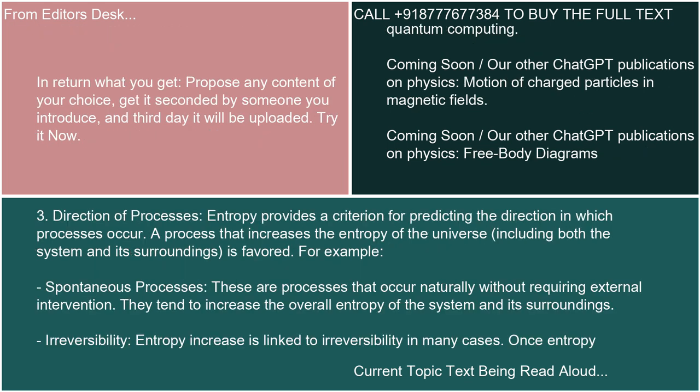3. Direction of Processes: Entropy provides a criterion for predicting the direction in which processes occur. A process that increases the entropy of the universe, including both the system and its surroundings, is favored. For example, spontaneous processes are those that occur naturally without requiring external intervention — they tend to increase the overall entropy of the system and its surroundings.